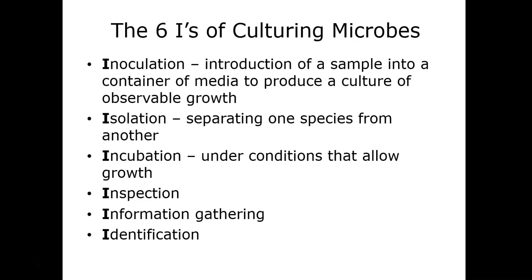When we inoculate, we hope to develop a pure culture — one consisting of only one type of microorganism — but we'll also discuss mixed cultures. From there, isolation is the process of separating one bacterial species from another. Then we have incubation: ovens microbiologists use to control temperature, typically at 30°C or 37°C, with 37°C being close to body temperature of 98.6°F.